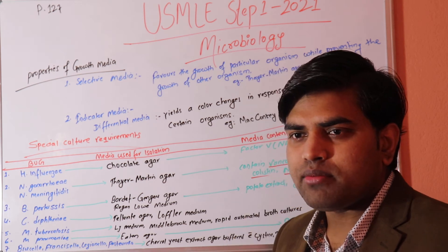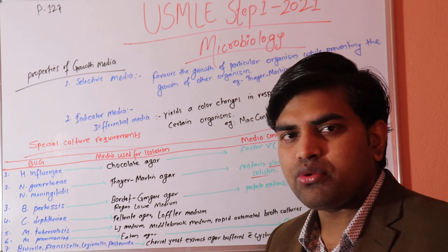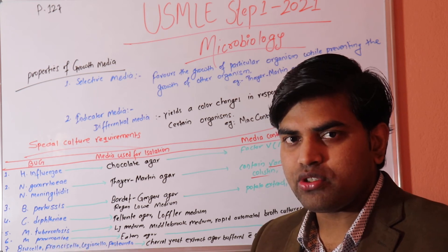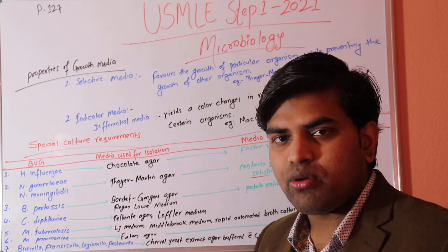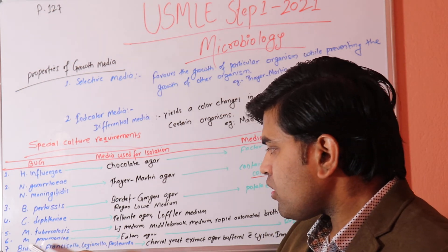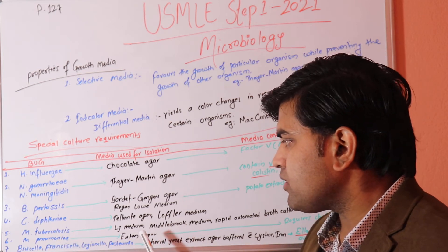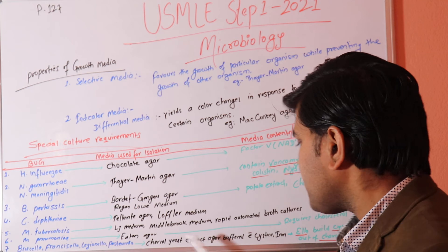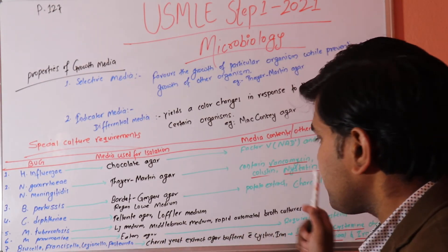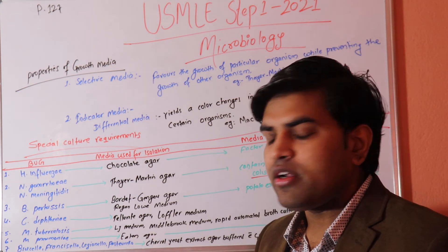Mycobacterium tuberculosis will not grow in normal media — it requires Löwenstein-Jensen media, Middlebrook medium, or rapid automated broth culture. This information is clinically important: if a patient presents with chest pain, cough, and hemoptysis and there is growth on LJ medium, this points to Mycobacterium tuberculosis.